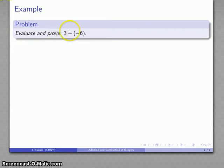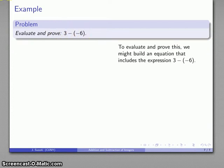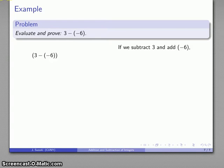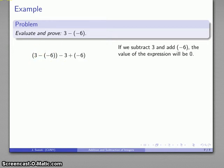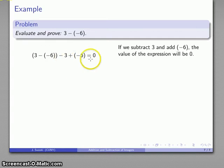Let's take a look at the problem 3 minus negative 6. If I want to evaluate and prove this expression, I might want to build an expression that includes 3 minus negative 6. If I subtract 3, that'll get rid of this. And if I add negative 6, that'll get rid of the minus negative 6. The value of that expression is going to be 0, so that gives me the equation: 3 minus negative 6, minus 3, plus negative 6 is 0. We have 3 minus 3, plus negative 6 minus negative 6. After all the dust settles, everything cancels out and I get a sum of 0. There's my first equation.